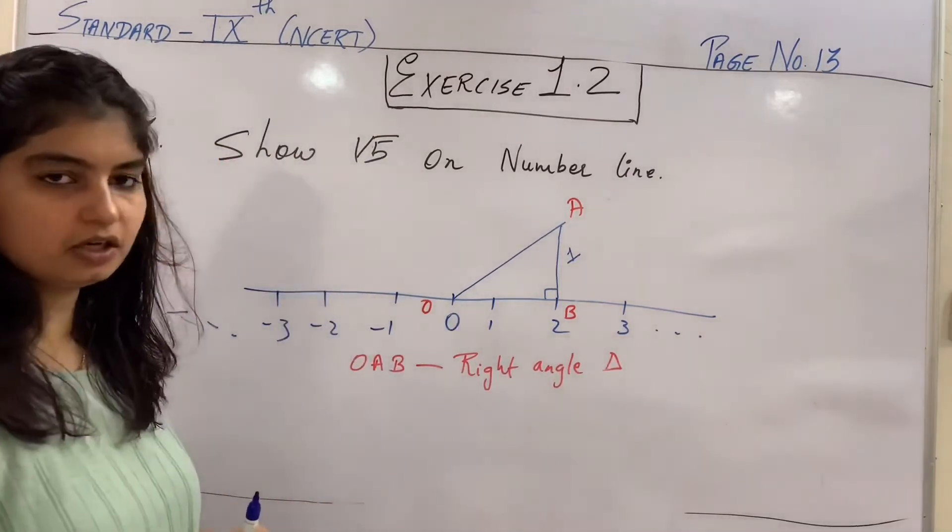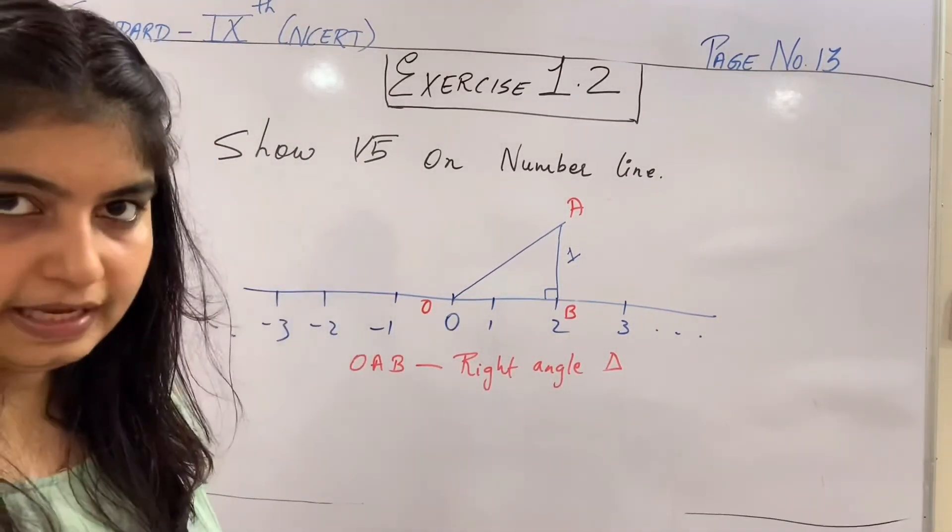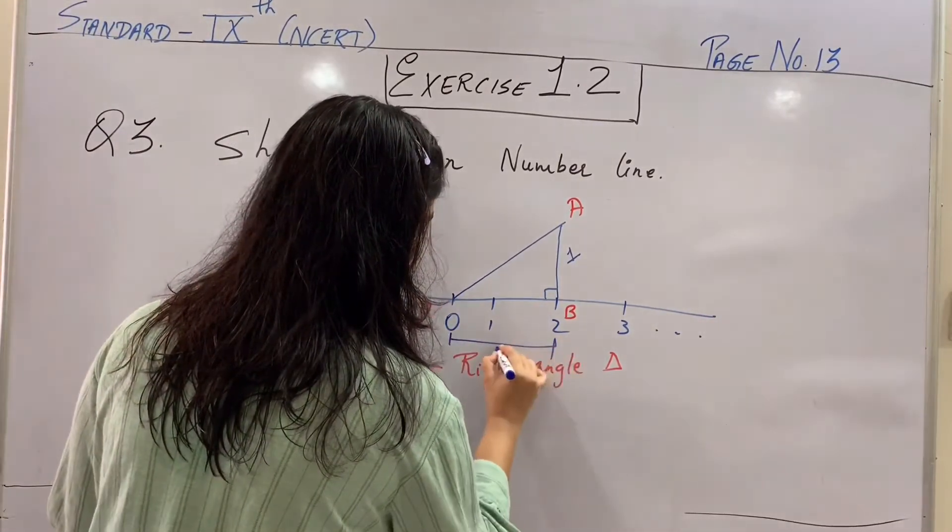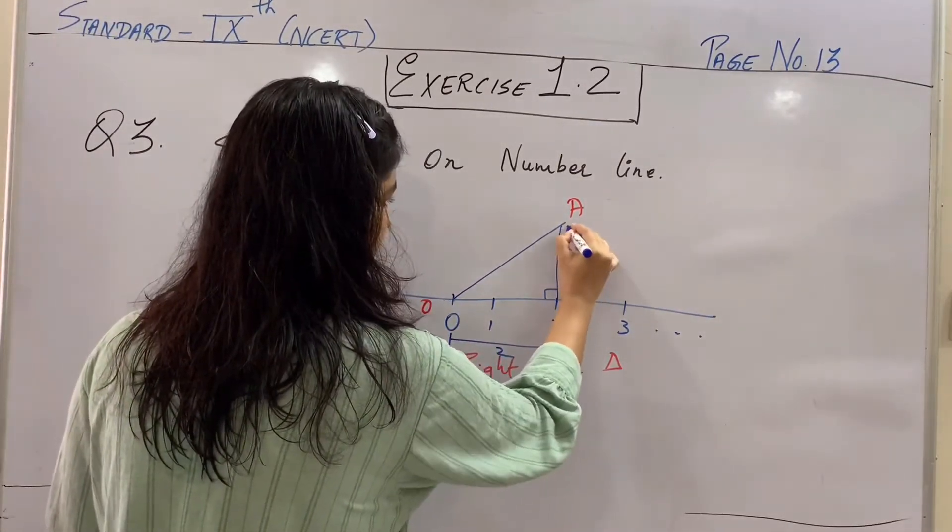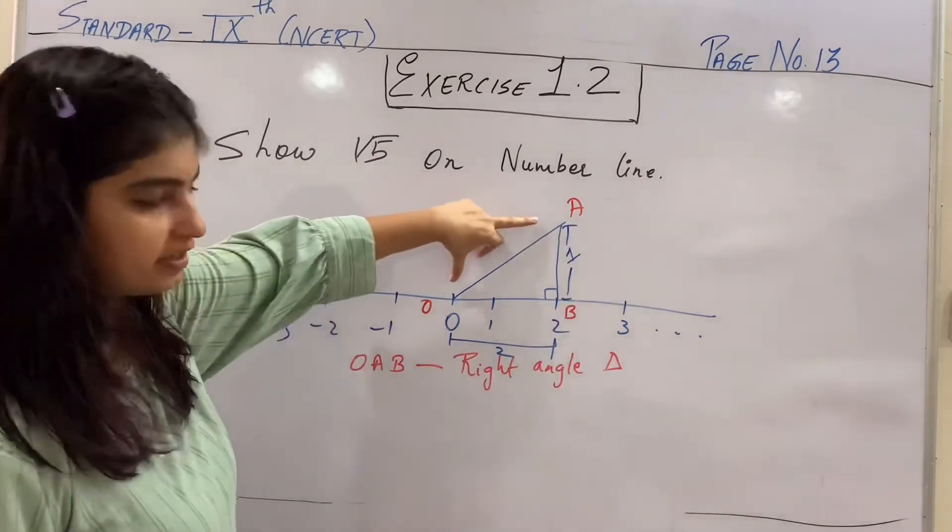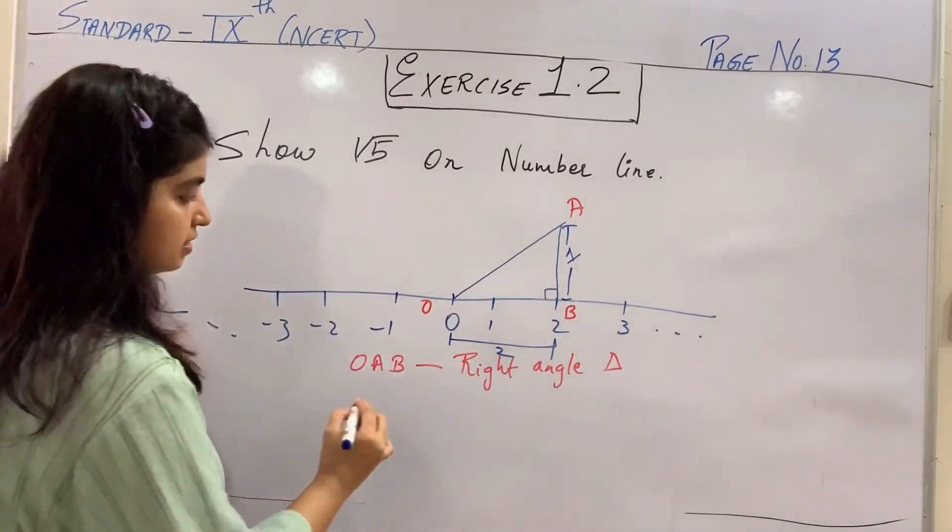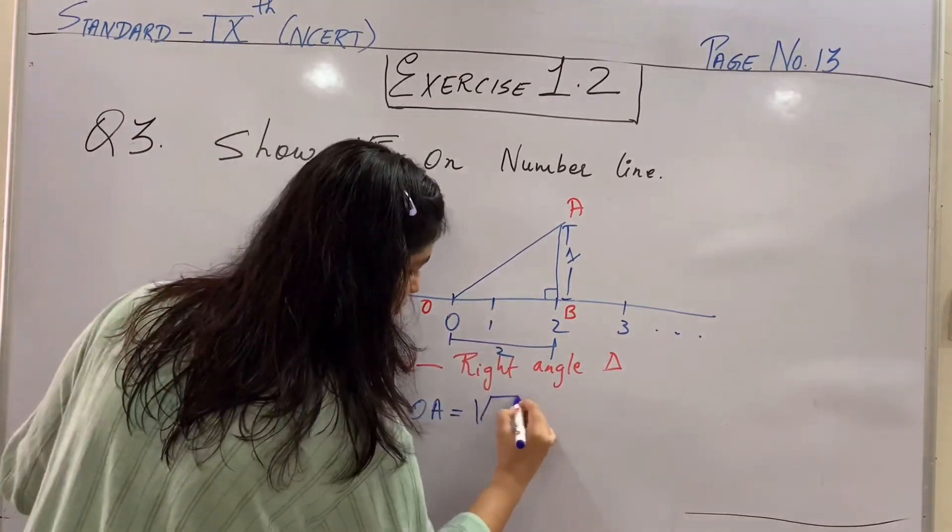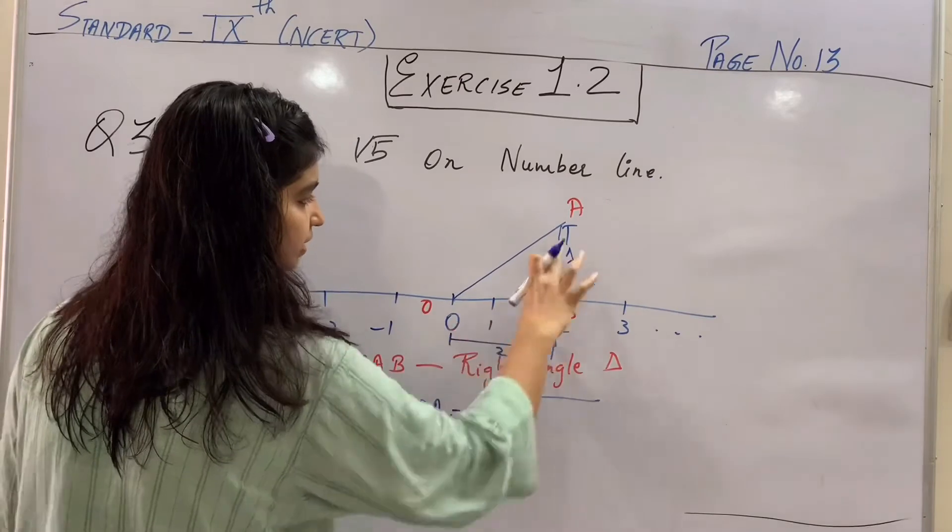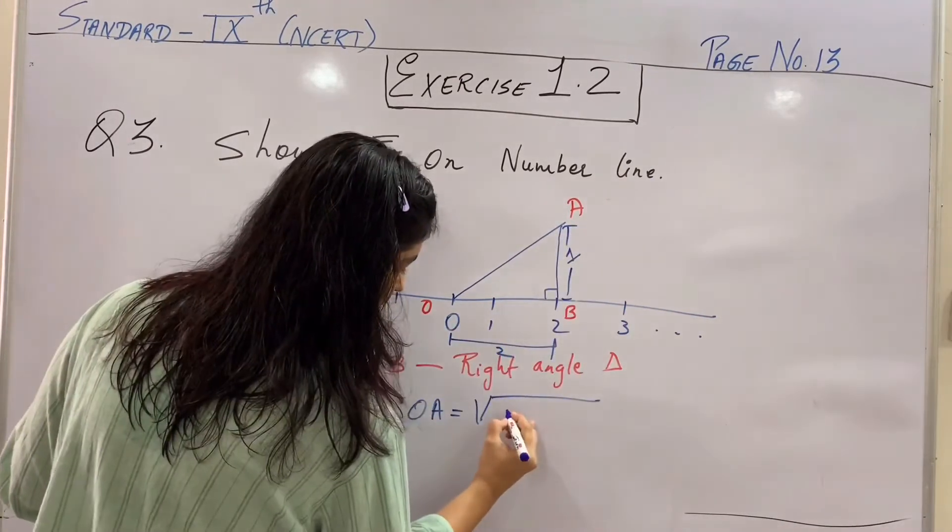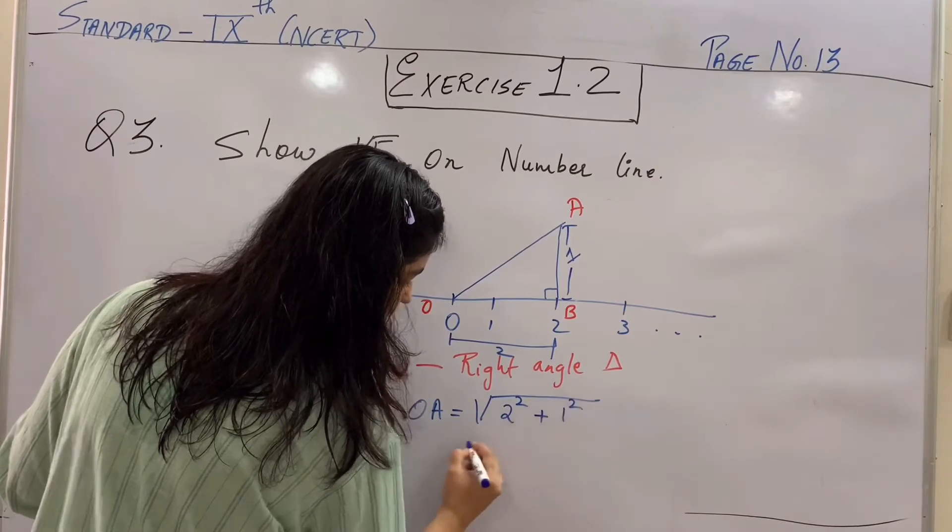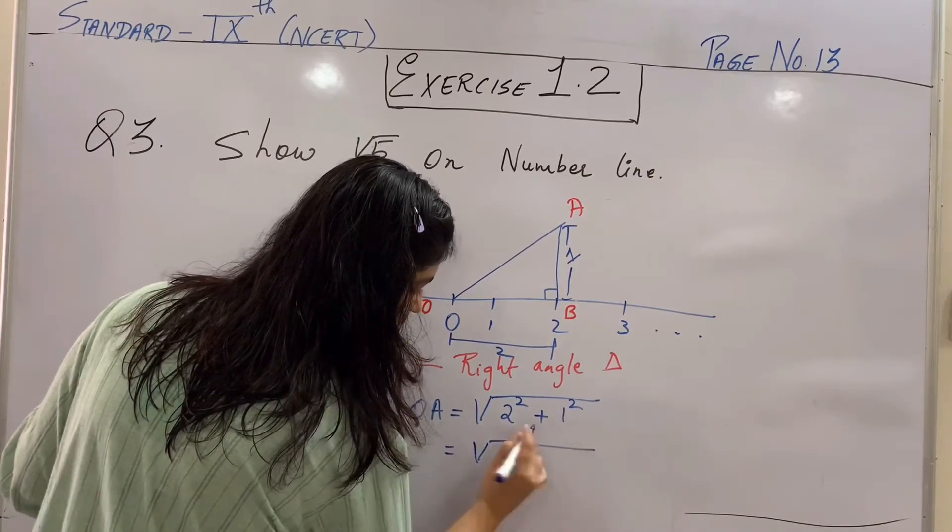A right angle triangle hai. Can we apply the Pythagoras here? Can we apply? Absolutely. So yeh length abki kya kya kahan rahi hai 2. This is your length 1. So to have the hypotenuse distance that is OA, how to find OA? That is root of this side square and this side square.